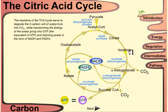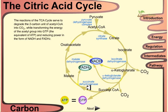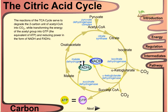The most important points: isocitrate to alpha-ketoglutarate produces carbon dioxide; alpha-ketoglutarate to succinyl-CoA produces carbon dioxide; both of these steps also produce NADH. The succinate dehydrogenase step produces FADH2, and the succinyl-CoA to succinate step produces GTP. These are the key steps to remember. I hope this video has helped you. Thank you.